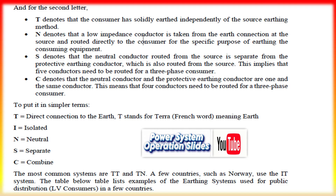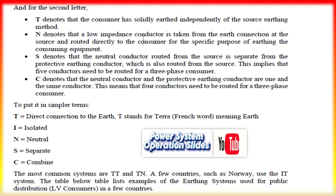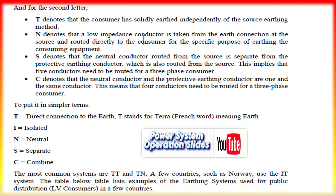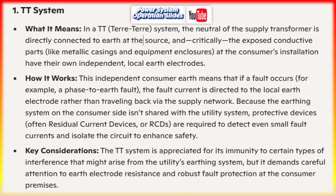Because the earthing system on the consumer side isn't shared with the utility system, protective devices — often residual current devices or RCDs — are required to detect even small fault currents and isolate the circuit to enhance safety. Key considerations: the TT system is appreciated for its immunity to certain types of interference that might arise from the utility's earthing system, but it demands careful attention to earth electrode resistance and robust fault protection at the consumer premises.